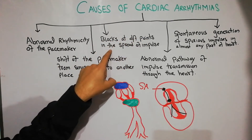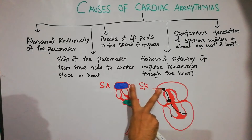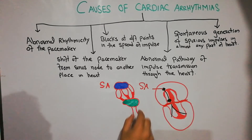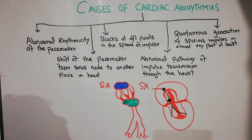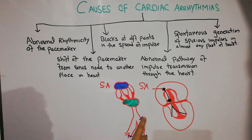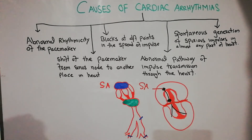The third cause of arrhythmias is blocks at different points in the spread of the impulse. The impulse is generated in the SA node, travels through pathways to the AV node where it gets delayed, and then transfers through the Purkinje fibers into the cardiac muscles. If we have a block at any of these points — due to infection, ischemia, trauma, or other causes — it will disturb the rhythm, and the heart will not beat at its normal rhythm.